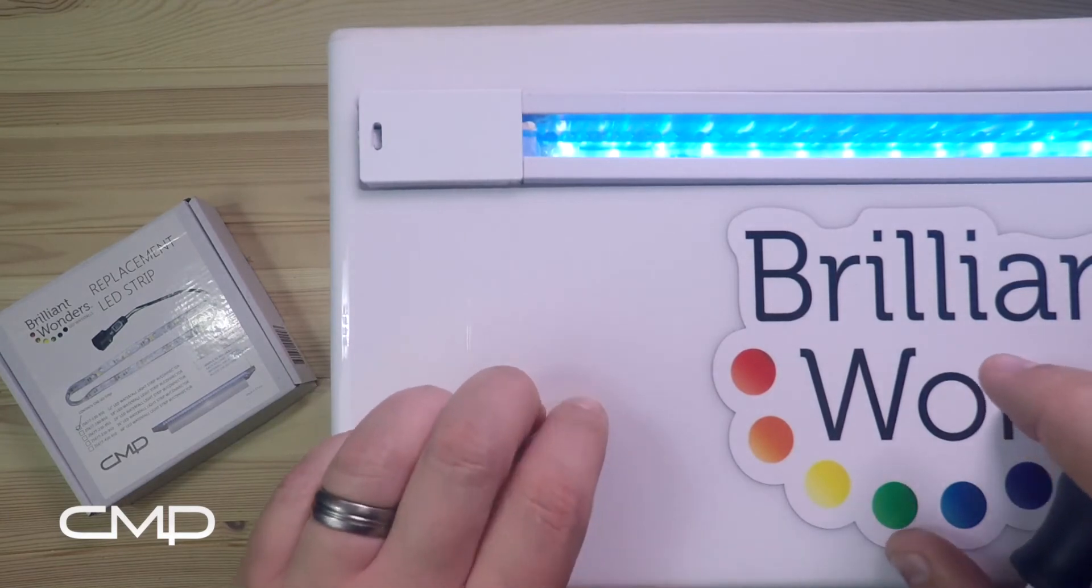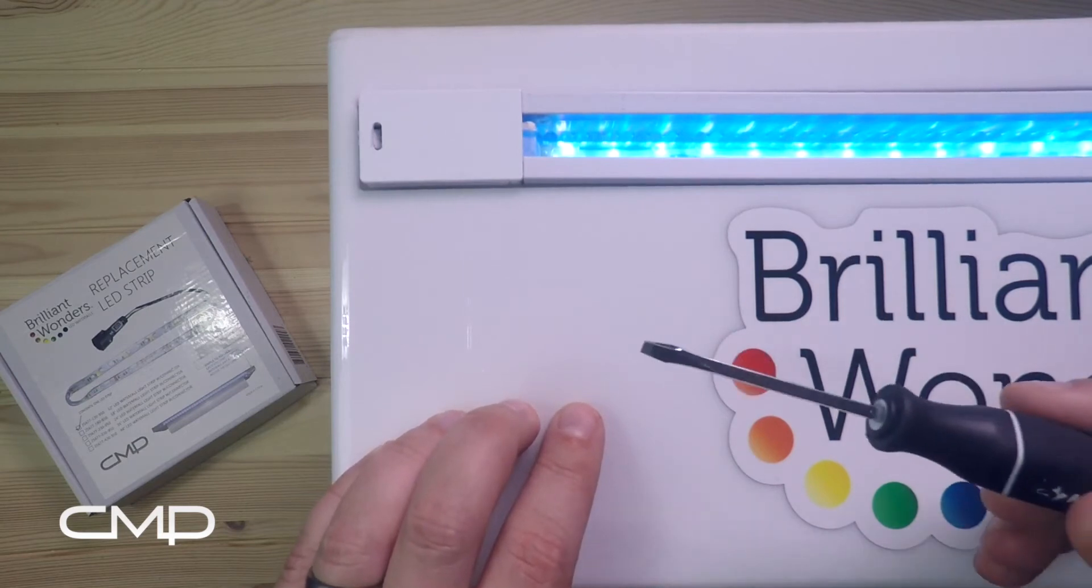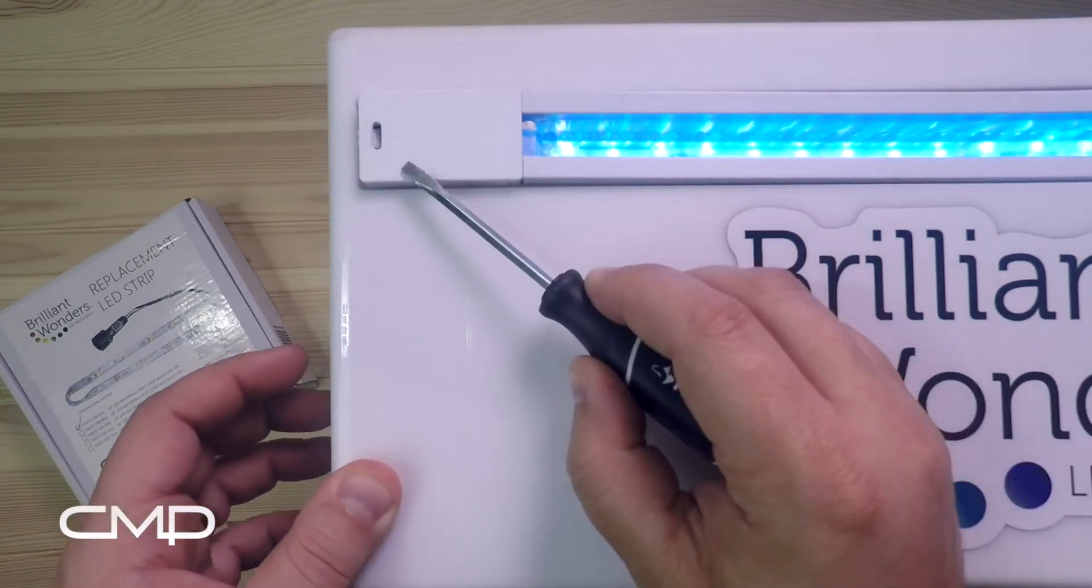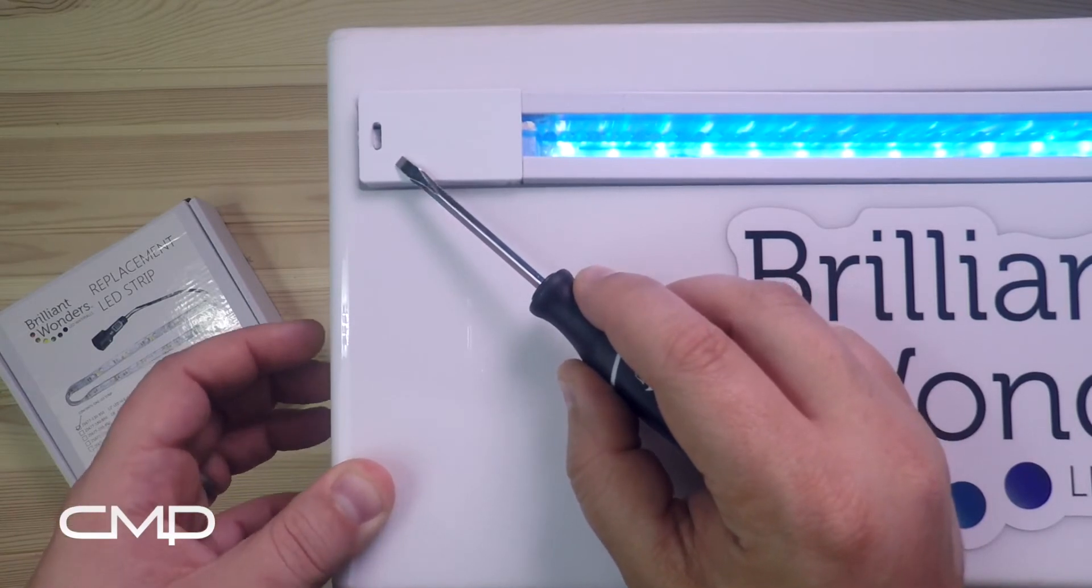So let's get started. The main tool you're going to need is just a small screwdriver, a little flathead. If you look here, there is a little keyhole where you can insert the screwdriver and unlock this door to get access to the LED strip.